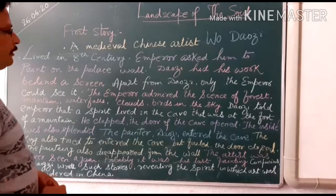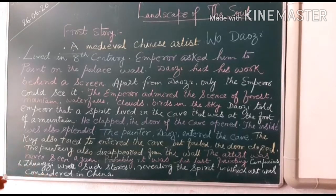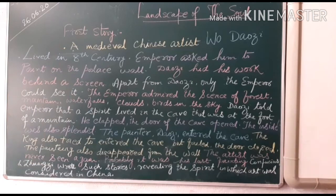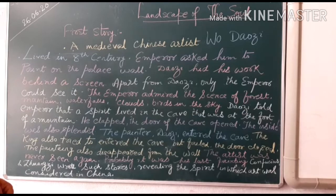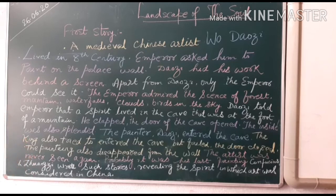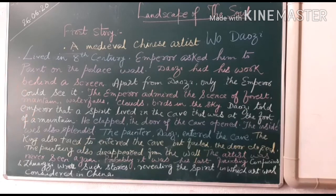Good morning students. Today we will study the chapter 'Landscape of the Soul.' This chapter has three stories and a comparison between Chinese art and Western or European art. The most interesting part of this comparison is that yoga is also mentioned in relation to Chinese art.